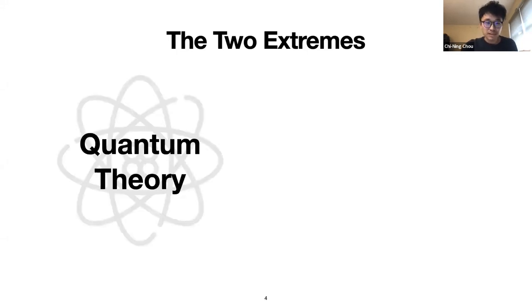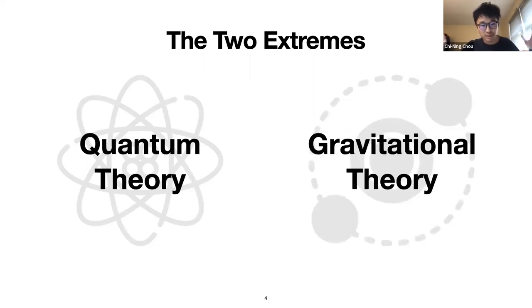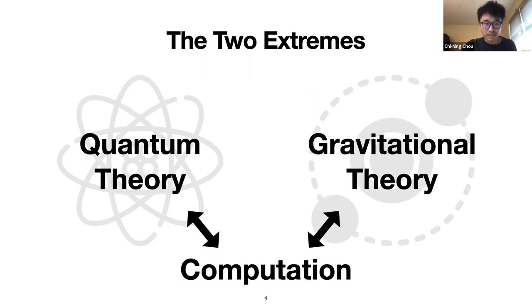So what are quantum and gravity? Basically they are like the two extremes in the world — quantum is at the microscopic scale, and gravity is about very large scales, like a theory of understanding the motion of big objects. Today I hope to give you a taste and a feeling about the relation of computation to these two theories.